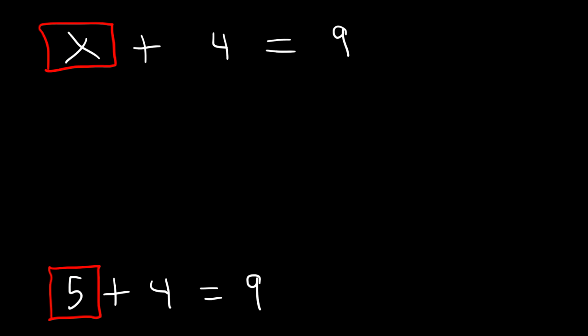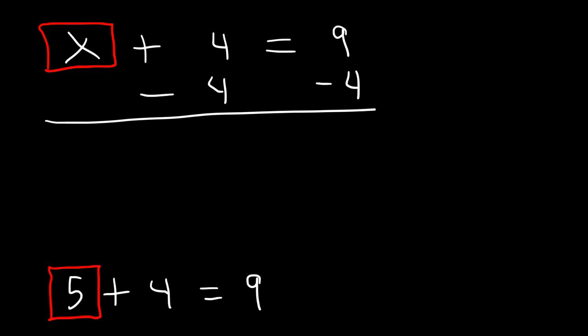Now, to show your work, you need to perform the opposite of addition. The opposite of addition is subtraction. So if we subtract both sides by 4, negative 4 plus 4 is 0, so these two cancel. And 9 minus 4 is 5, so x is equal to 5.